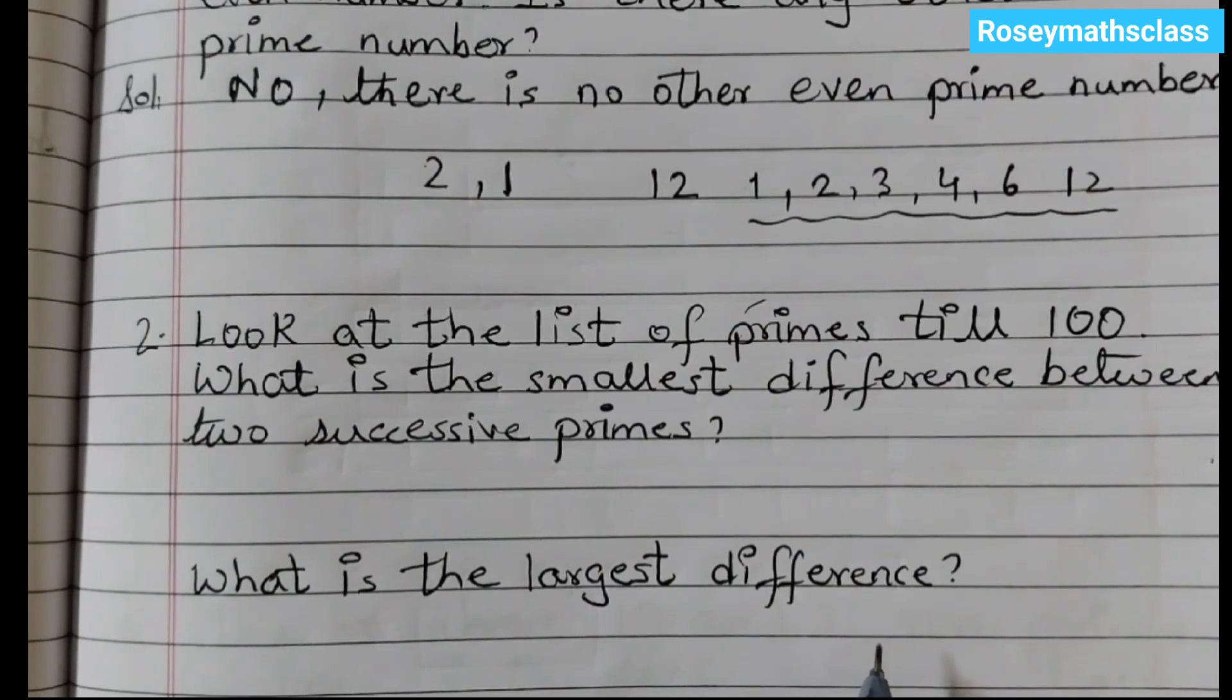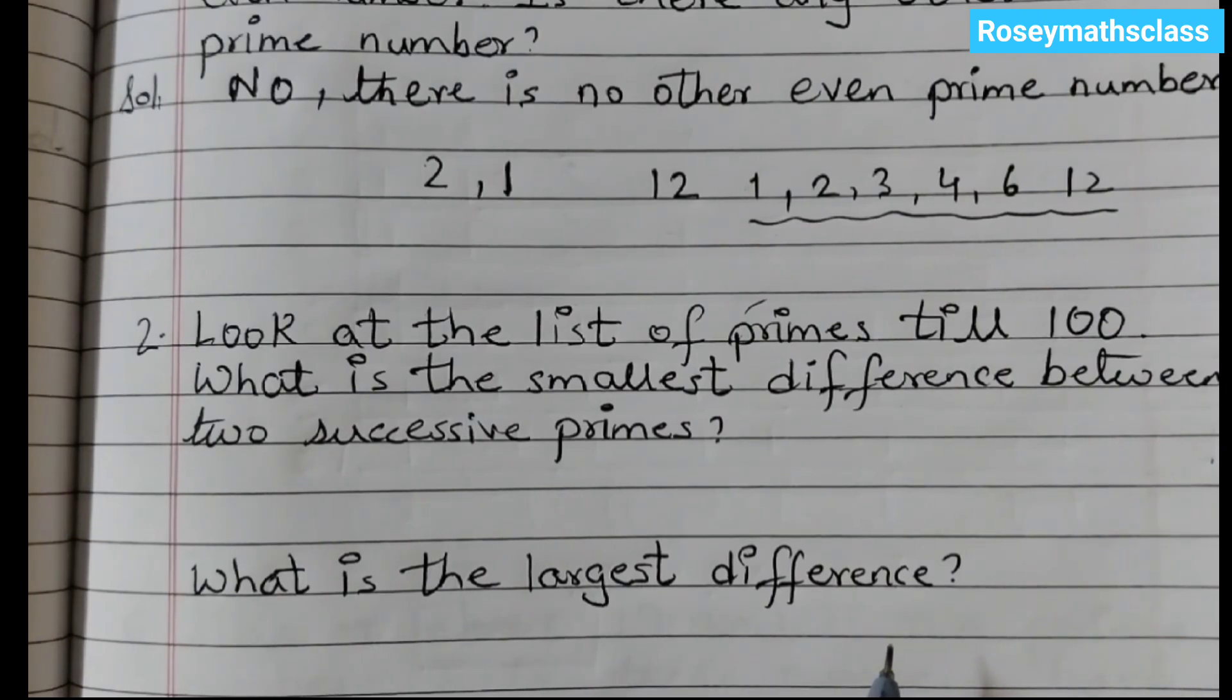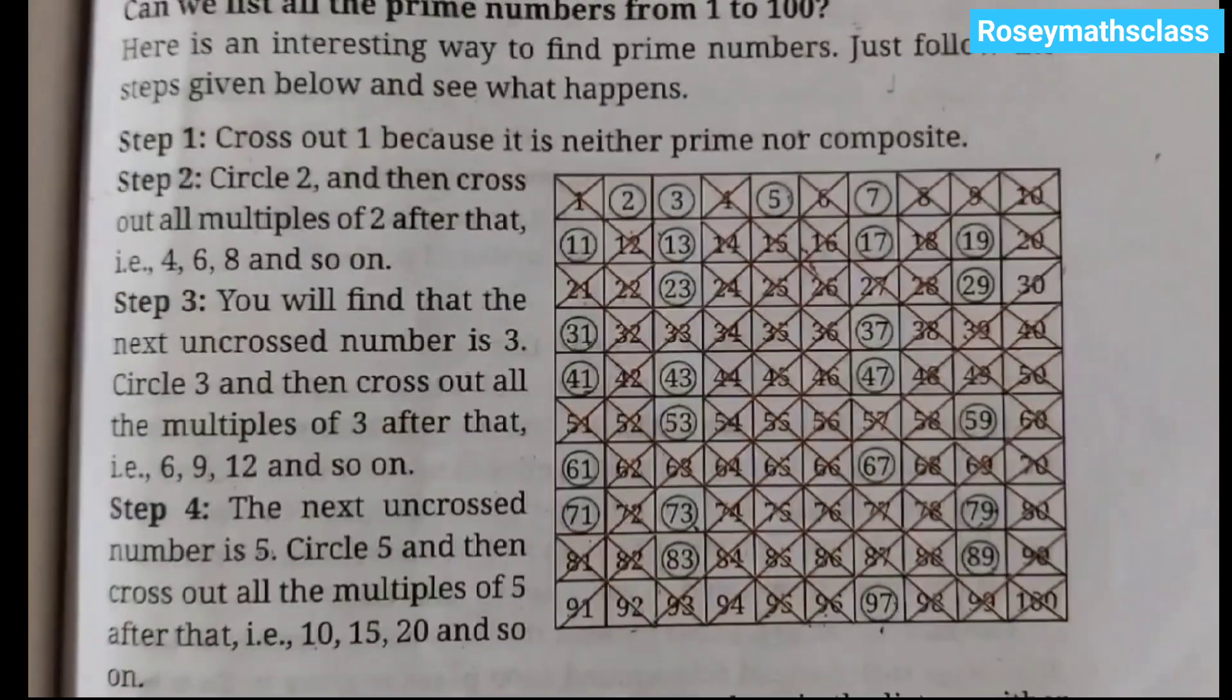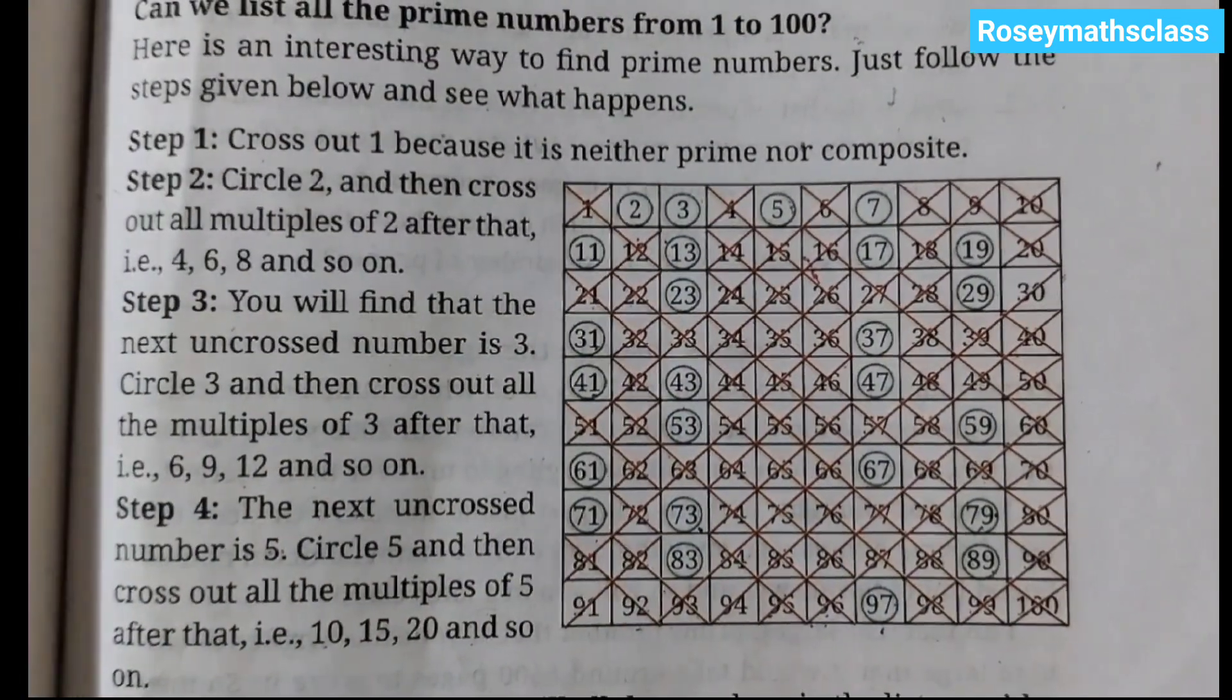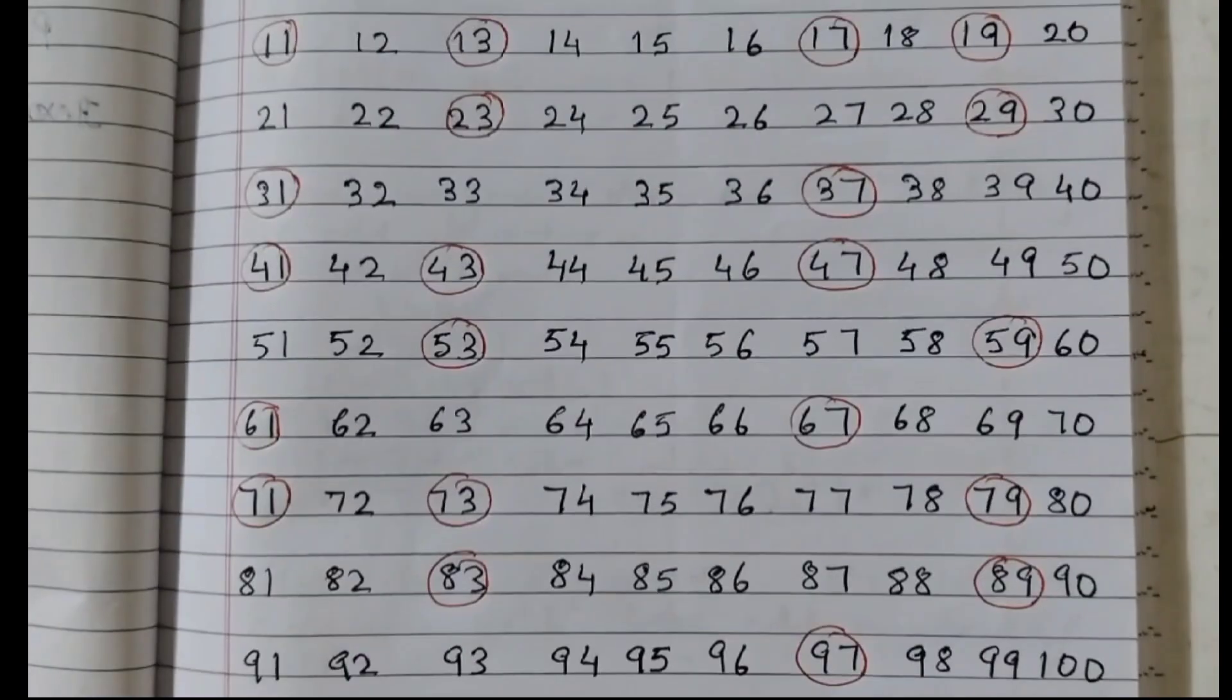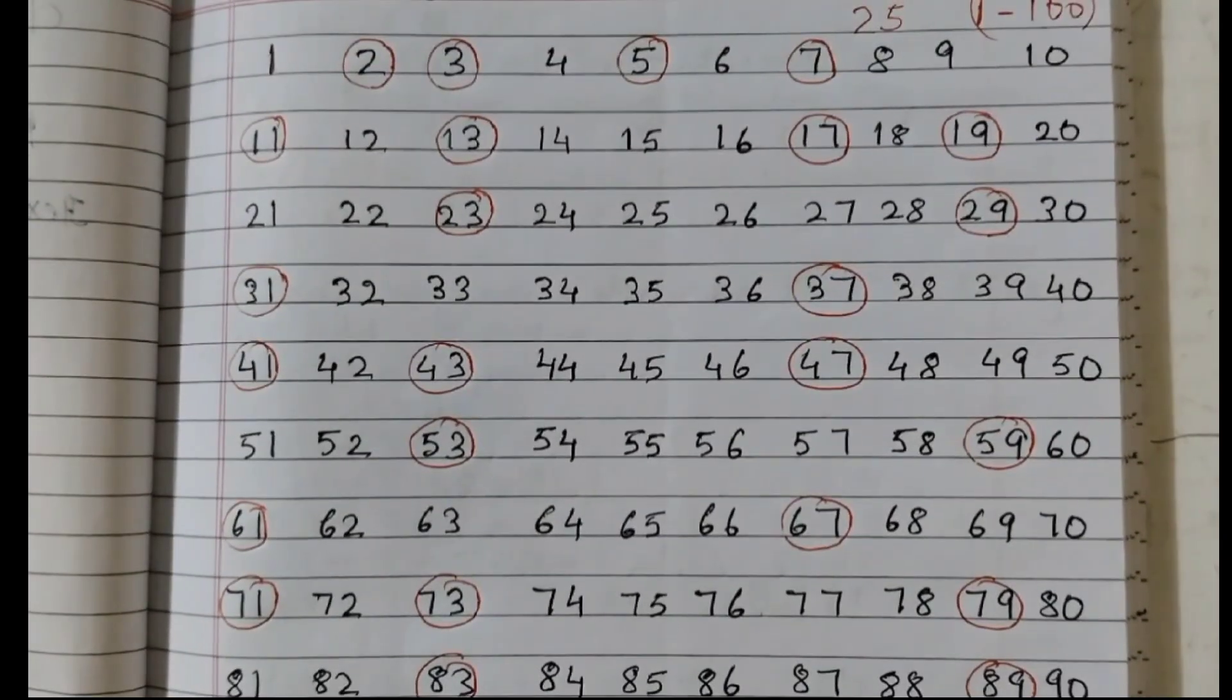We need to find the prime numbers till 100 and then the smallest and largest difference between successive primes. To answer this question, you need to refer to this table given in your textbook. I have already written it down in my notebook, so I am going to share that with you. Starting from number 1 till 100, I have written all the numbers and circled the prime numbers.